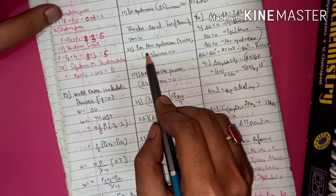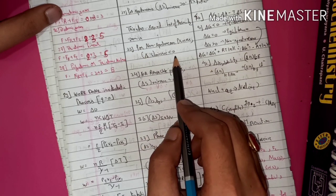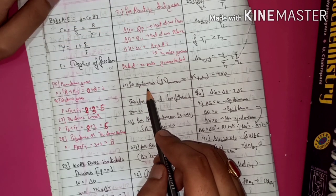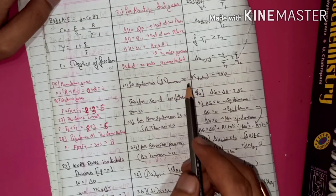For the non-spontaneous process, entropy change of the universe is less than zero. And for the spontaneous process, entropy change of the universe is more than zero.